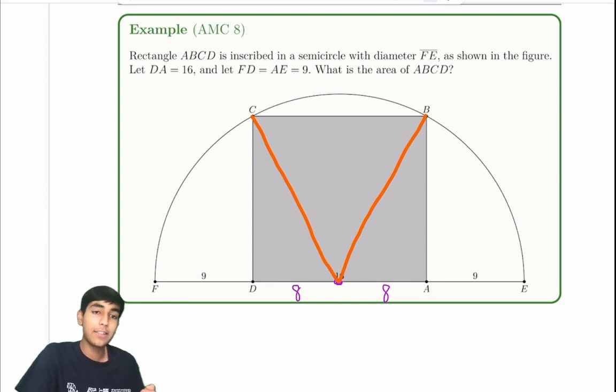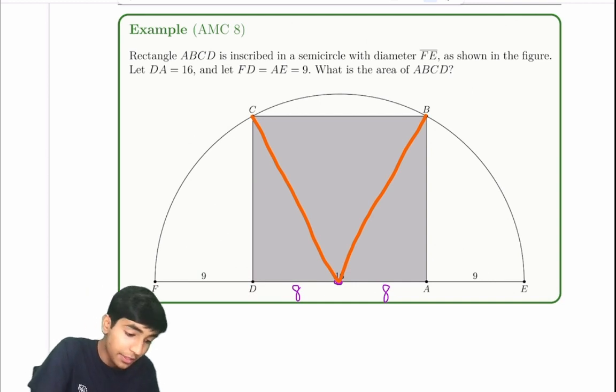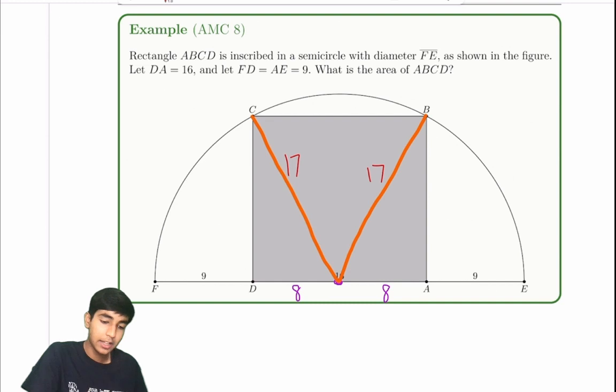So first of all, what is this radius? From here to here, notice how that's 17. So that means that this over here will also be 17, and this as well, because they're both radii of circle. What is the area of ABCD? That's a rectangle, right?